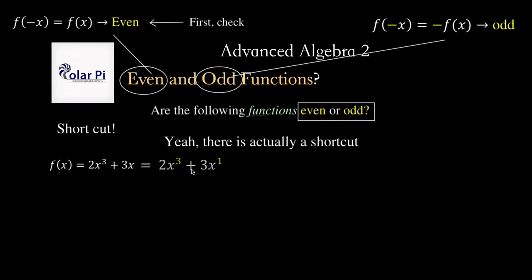So if all of the terms, the exponents of x are odd, then the function is odd. So we could have very quickly told that f is odd simply because this x here has an exponent that's odd and this x here too has an exponent that's odd. And these are the only terms in the polynomial.